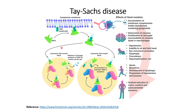Let us now understand the normal case where Tay-Sachs disease is not present. In the normal case, GM2 gangliosides present in the cytoplasmic membrane will move towards the lysosome. With normal HEXA enzyme present in the lysosome, the GM2 gangliosides are taken up by the HEXA enzyme and breaking of the GM2 gangliosides occurs.